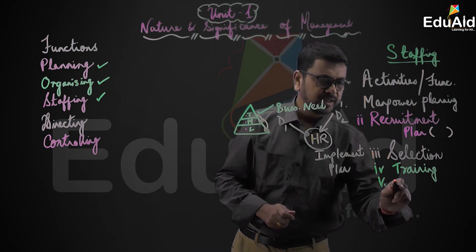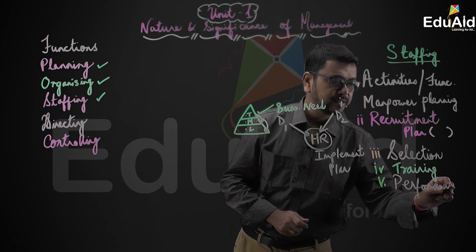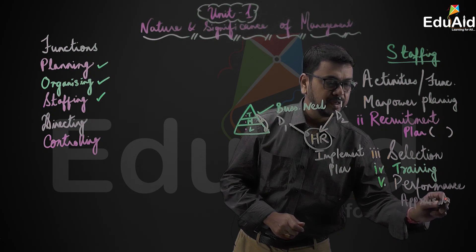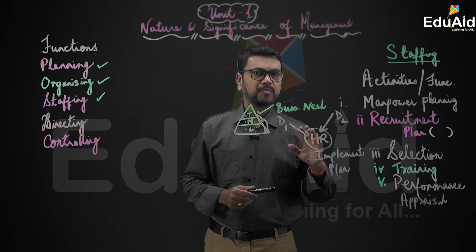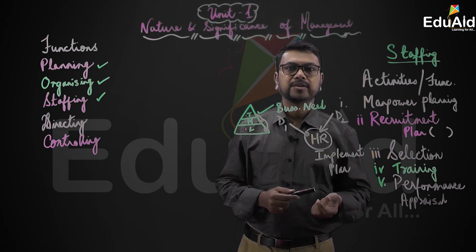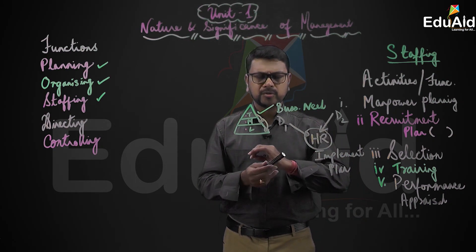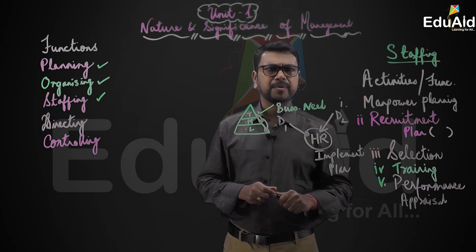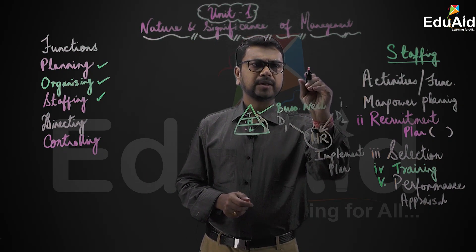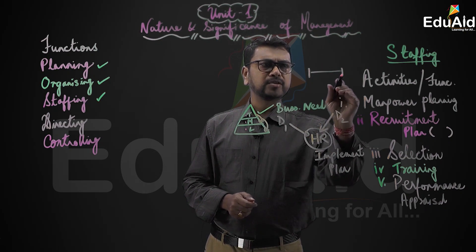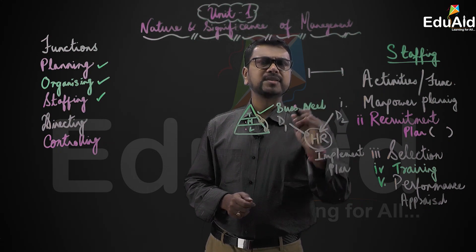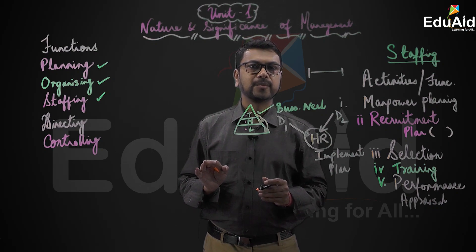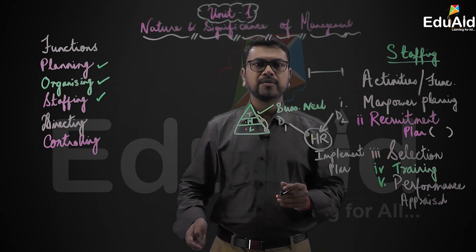The last step is also very important, and this is called performance appraisal. The steps are: first, manpower planning; second, recruitment strategy; third, selection of candidates through interview or written tests; fourth, training; and fifth, performance appraisal. When you start working, over a duration of one year your performance is appraised — it is like a mark sheet or an annual examination, similar to moving from class 11 to 12 and so on.